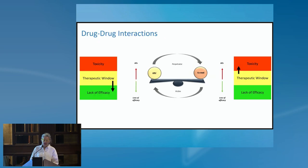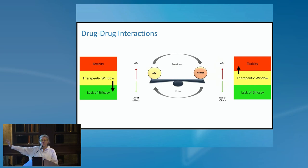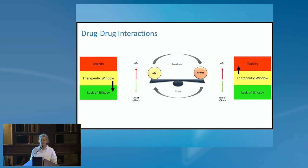Let's focus on drug-drug interactions, because there is a very important general concept we have to know. What we have been used to for a very long time is antiretroviral drugs being perpetrators of drug-drug interactions — when we use ritonavir and cobicistat that inhibit CYP450 3A4 and lead to an increase of the co-medication that can become toxic.